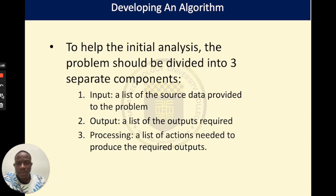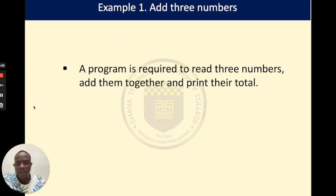Using these steps that we talked about, let's see if we can solve a problem. First, we are going to define our summary table which will consist of the inputs, the outputs, and the processing sections. The problem says: a program is required to read three numbers, add them together, and print their total.